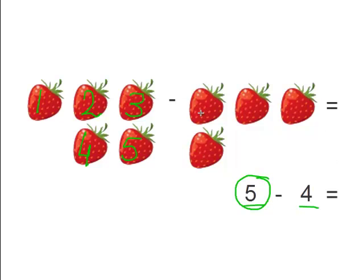So 5 minus these. 1, 2, 3, 4 strawberries. So the 4 strawberries matches the 4 below.